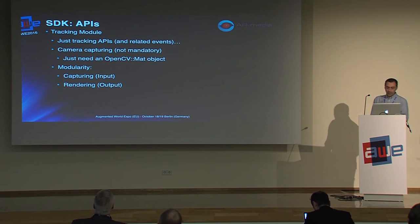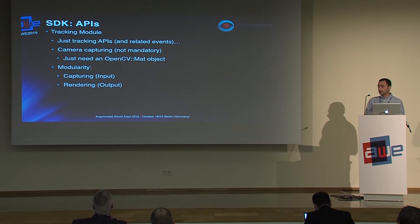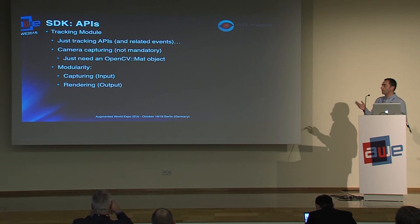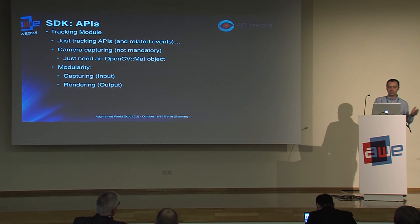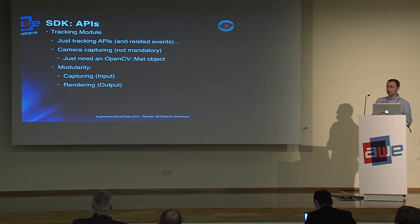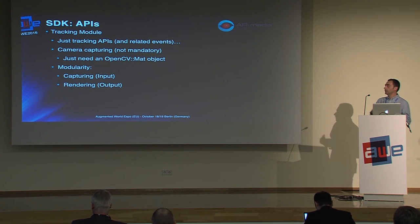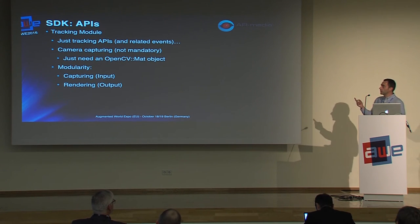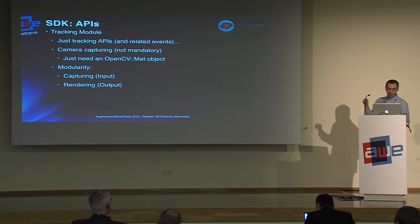Going to the tracking module — keeping in mind we want a very simple SDK — you just have APIs ready for tracking. You don't need to use the camera capturing APIs if you prefer not to. What's important is that you provide an OpenCV frame: as long as you can convert any frame you capture into an OpenCV Mat object, you can feed it into the tracking APIs and get the object tracking facilities. This is significant because it means we don't constrain you to any specific rendering engine.